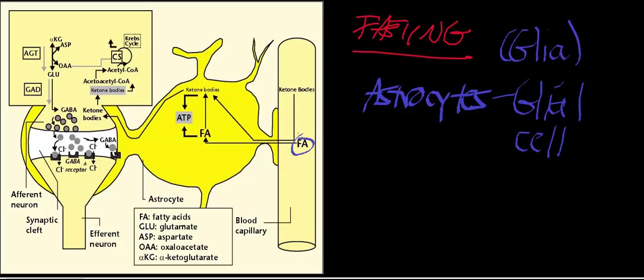The free fatty acids can be taken up from the blood into astrocytes. This dark yellow cell right here is an astrocyte. Astrocytes are glial cells and they're in direct contact with neurons. This cell here in purple is a neuron. Astrocytes serve the neurons by giving them food — it gives them nourishment.